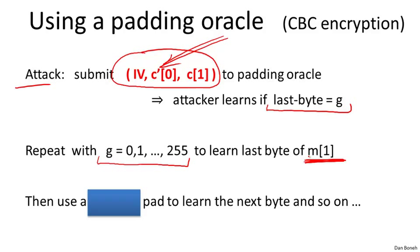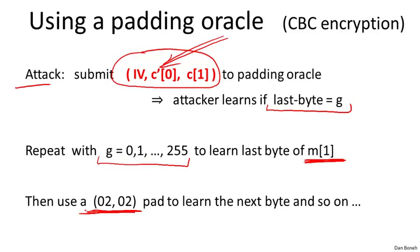Now we know the last byte of M1 and can use the exact same process to learn the second-to-last byte. Instead of using a pad containing byte 0x01, we use a 2-byte pad containing 0x02 0x02 — a well-formed pad. Since we know the last byte of M1, our XOR trick can always ensure the last byte of the plaintext is 0x02. We then guess the second-to-last byte with 256 additional queries to learn it. Iterating this process, since a block is 16 bytes, after 16 × 256 queries we recover all of M1.